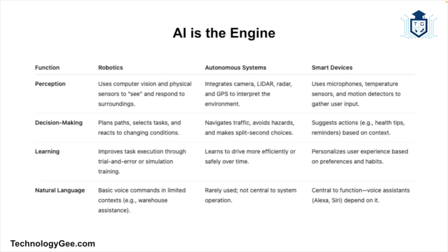All of these technologies have one common thread: AI is the engine. Whether it's a robot in a warehouse, a car navigating traffic, or a smartwatch monitoring your heart, artificial intelligence is driving all of these technologies. Understanding how AI interacts with the physical world helps you visualize the future of tech in your home, car, or job. It helps you make informed decisions about buying or using smart products, understand the challenges around AI safety, ethics, and privacy, and explore career opportunities that blend AI with robotics, engineering, or user experience.